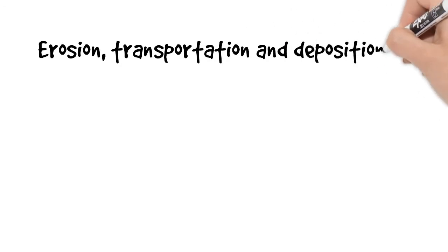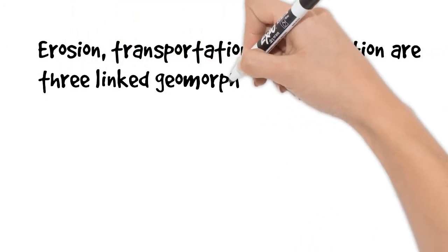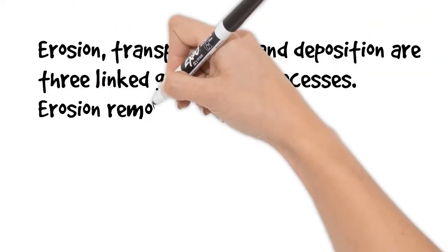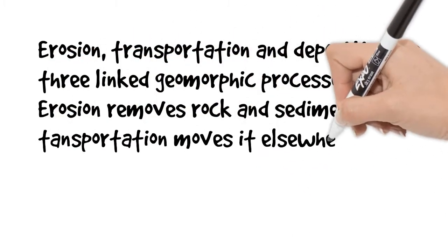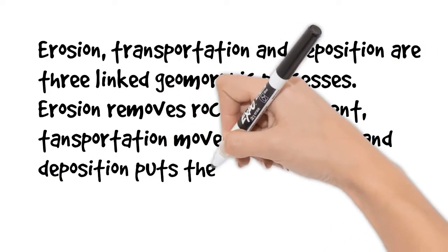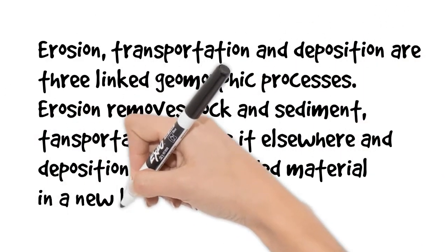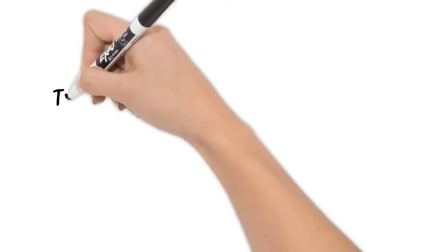Let's quickly remind ourselves that erosion, transportation and deposition are three linked geomorphic processes. Erosion removes the rock and sediment, transportation moves it elsewhere and deposition puts it down somewhere in a new location.